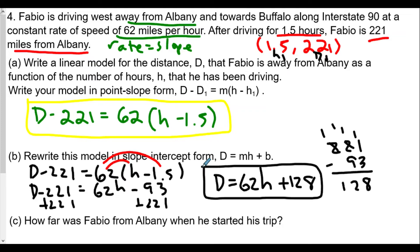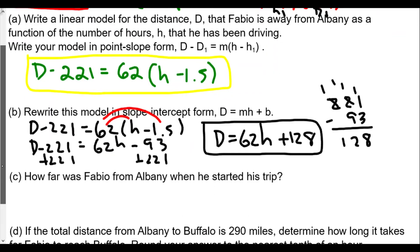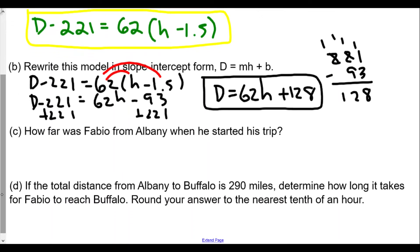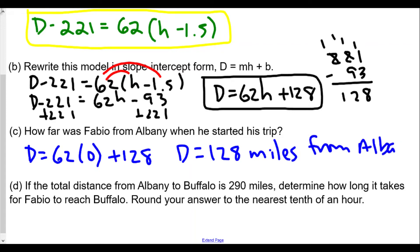Now how far was Fabio from Albany when he started his trip? In this case we see that Fabio, we set the function, well h equal to zero. So D = 62(0) + 128. He was 128 miles from Albany when he started his trip.